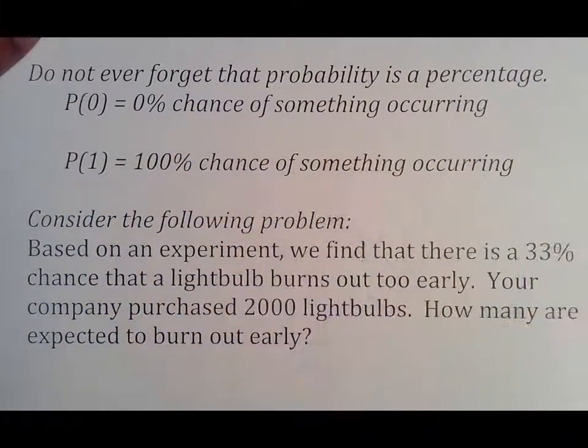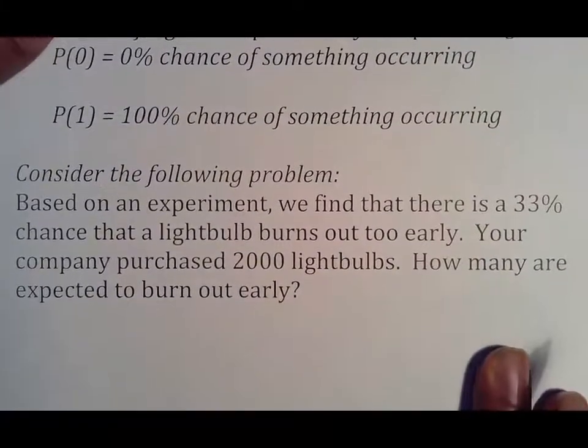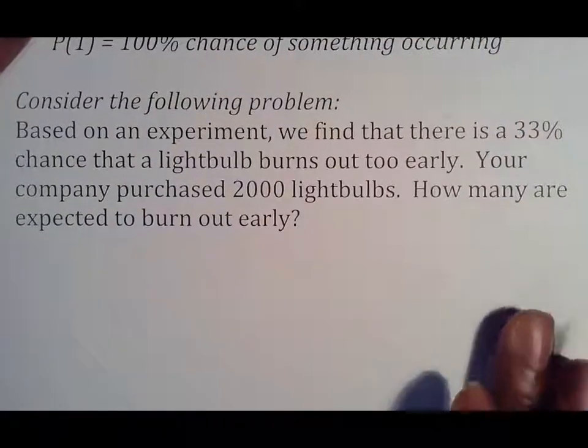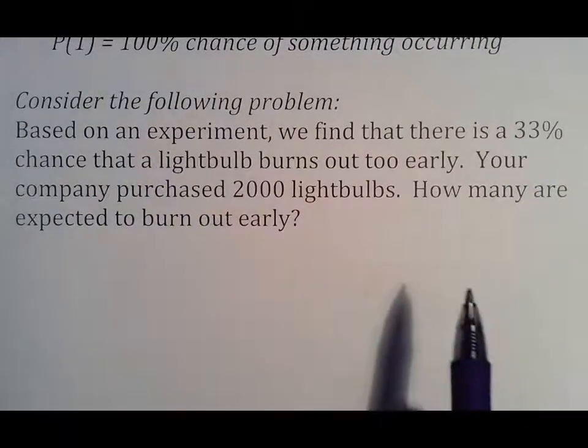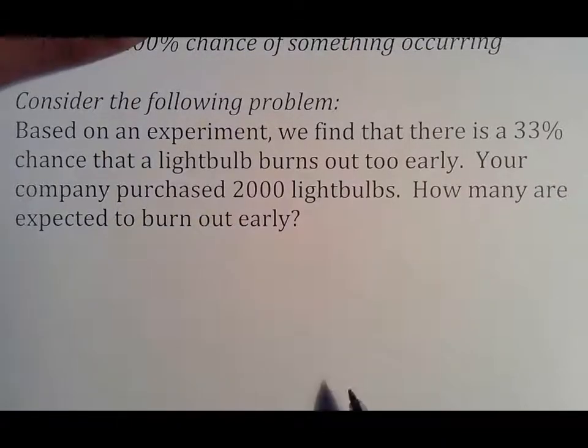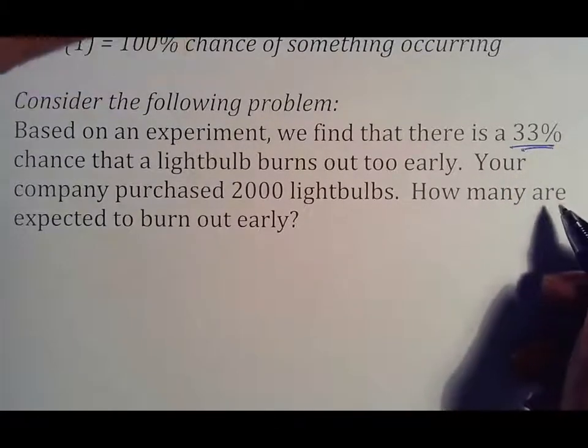Don't ever forget probability is a percentage. Probability of zero means zero percent chance of something occurring. Probability of one is a 100% chance of something occurring. So consider the following problem. Based on an experiment, we find there's a 33% chance a light bulb burns out too early. Again, this is experimental probability because it's an experiment.